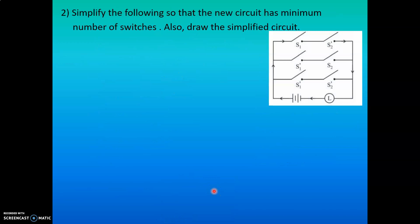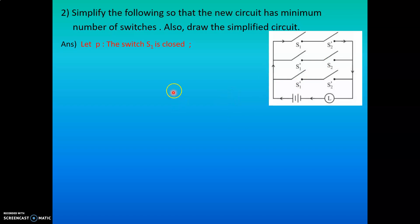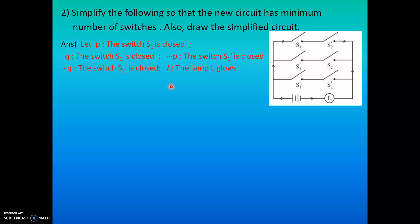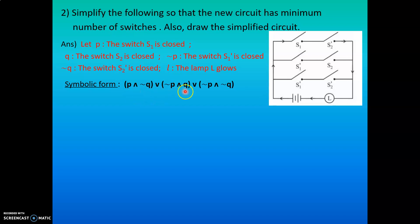The next question: simplify, but this time the question is not in symbolic form — it is given as a circuit. You must first convert it to symbolic form, then simplify. There are six switches: S1, S2, S1', S2'. Let P = S1 closed, Q = S2 closed, ¬P = S1' closed, ¬Q = S2' closed, and L = lamp glows. The symbolic form of the circuit is: (P ∧ ¬Q) ∨ (¬P ∧ Q) ∨ (¬P ∧ ¬Q).